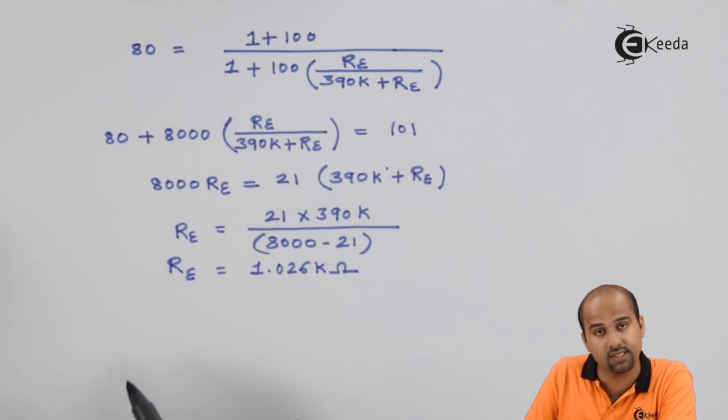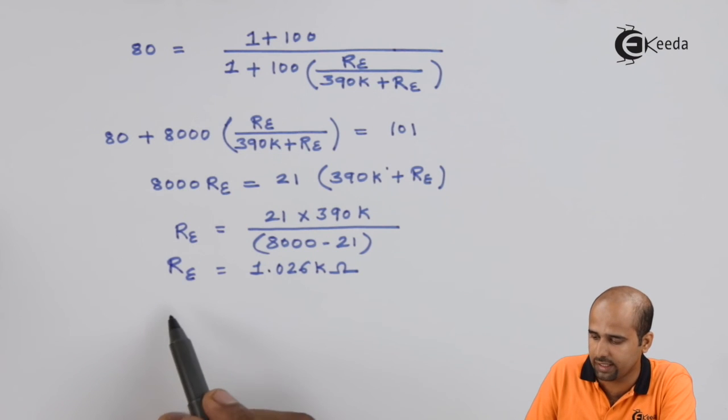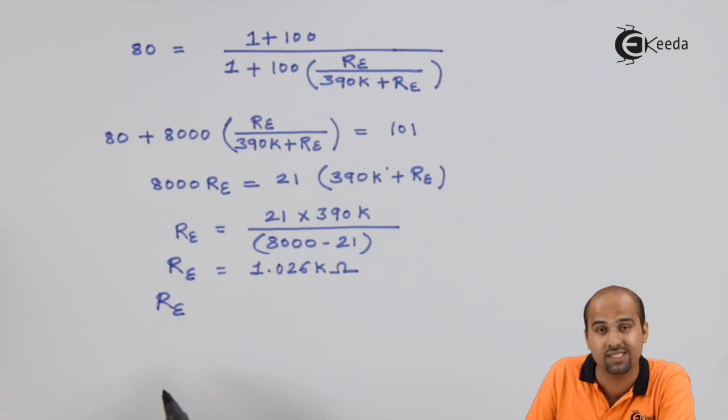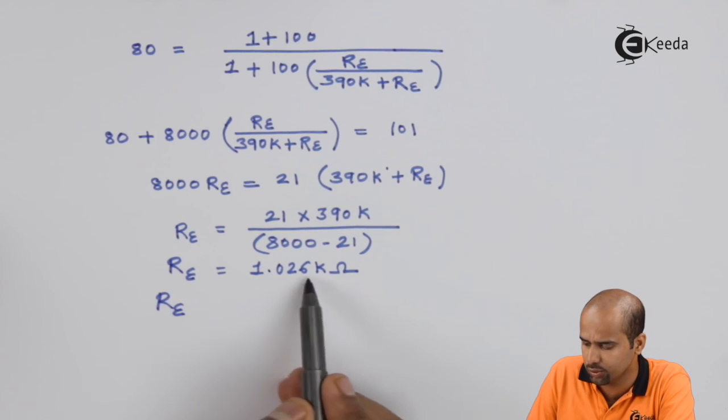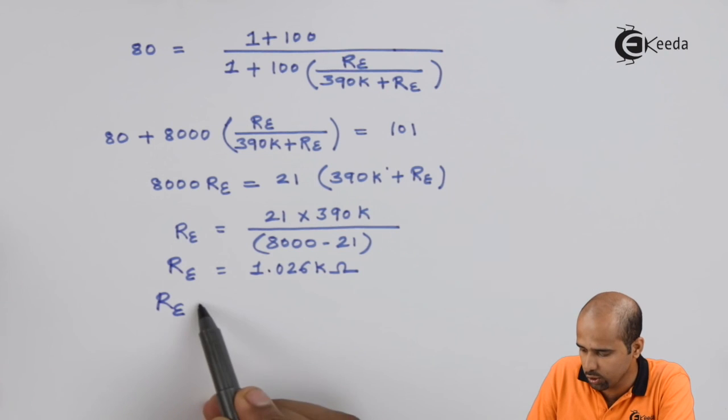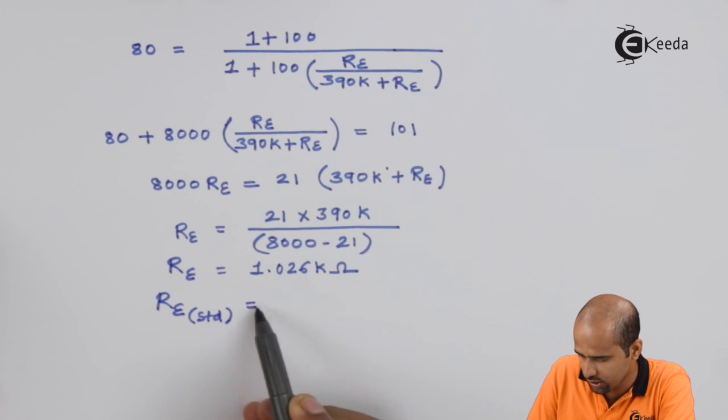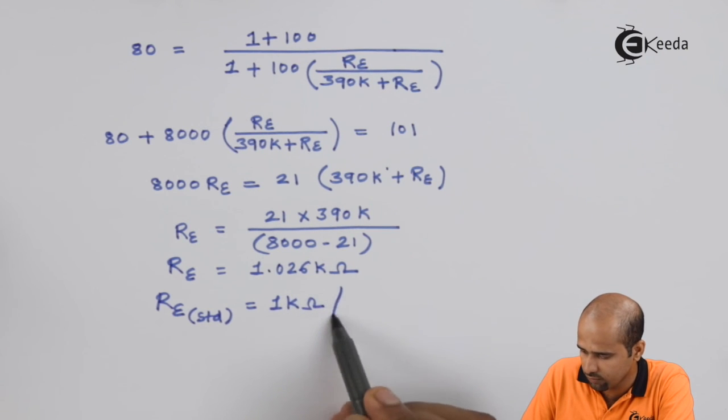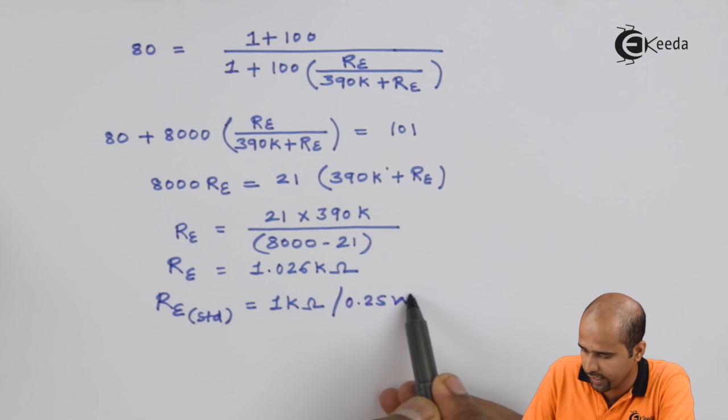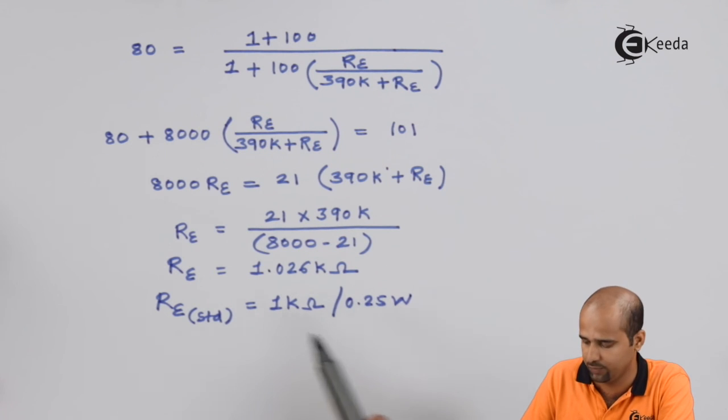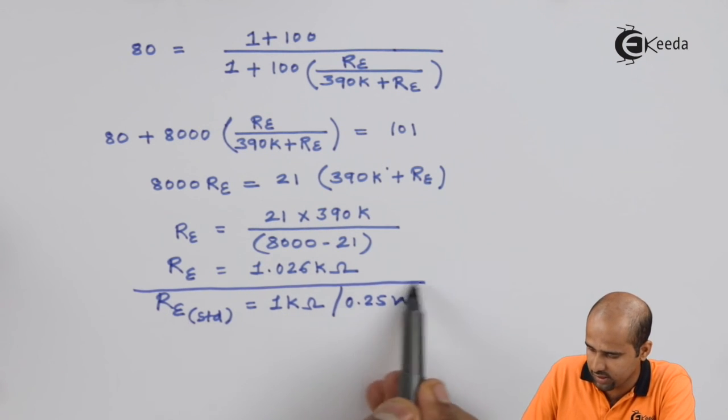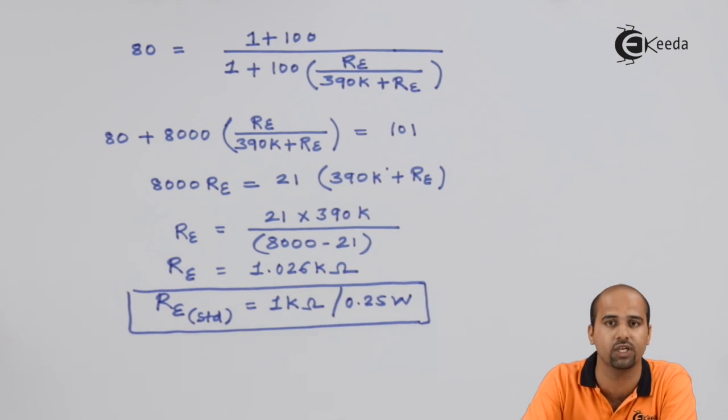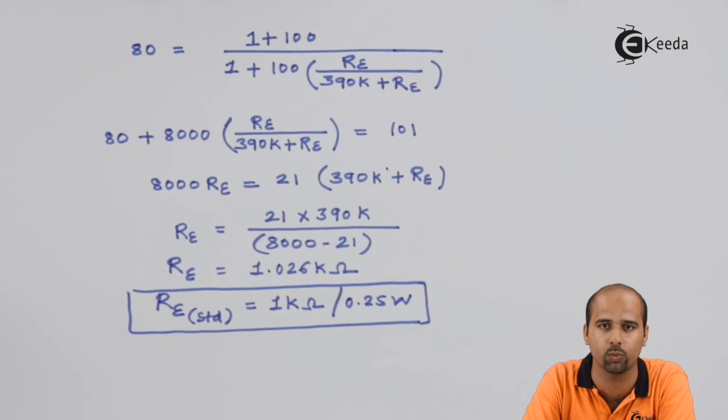As far as design is concerned, the value of RE should have a particular standard value near to this value. Obviously, the standard value includes 1 kilo ohm with 0.25 watt power rating. This is the requirement of resistance RE to meet the specification of stability factor equal to 80.